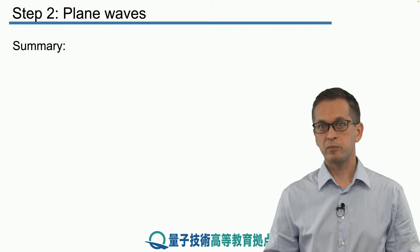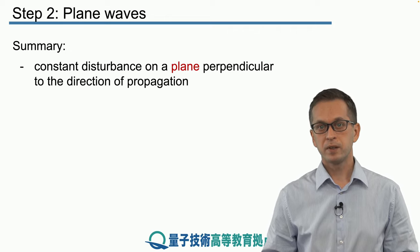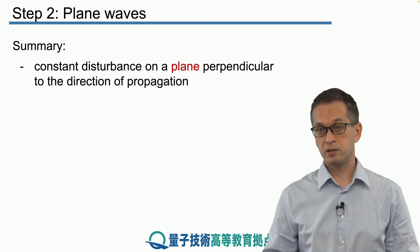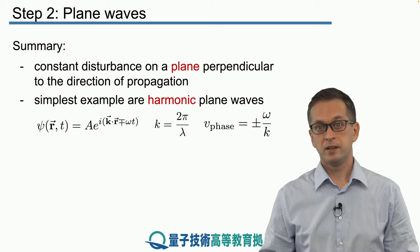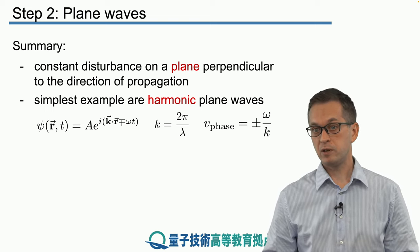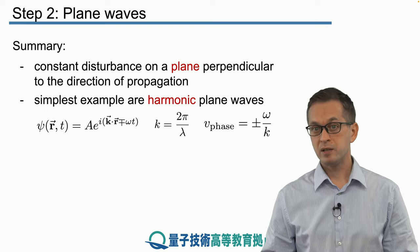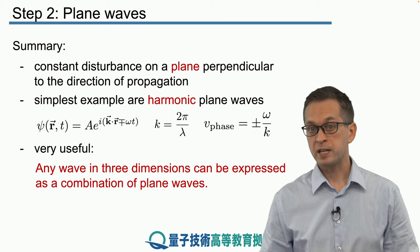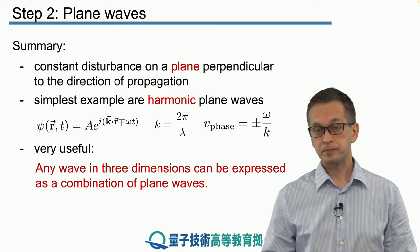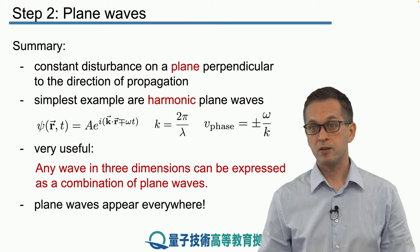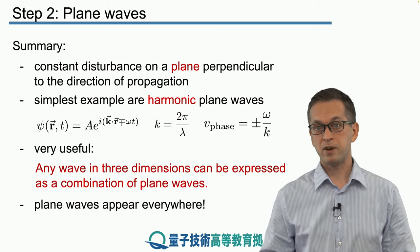To summarize: plane waves have constant disturbance on a plane perpendicular to the direction of propagation. The simplest example is the harmonic plane wave, where |k| = 2π/λ and the phase velocity is ±ω/k. Despite their simplicity, plane waves are very useful because they serve as basis functions to expand any complicated wave as a superposition of plane waves. They appear everywhere in engineering, physics, and mathematics, so it's very advisable to get used to them.